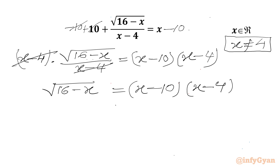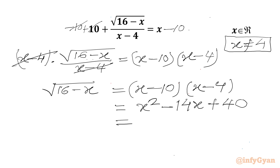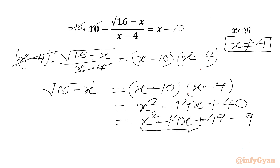So we will get square root of (16 minus x) equal to (x minus 10)(x minus 4). I can write the RHS as x squared minus 14x plus 40. Now I can make this a perfect square: x squared minus 14x plus 49 minus 9, since 49 minus 9 is 40. From the first three terms we can write this as (x minus 7) squared, and then we have minus 9.